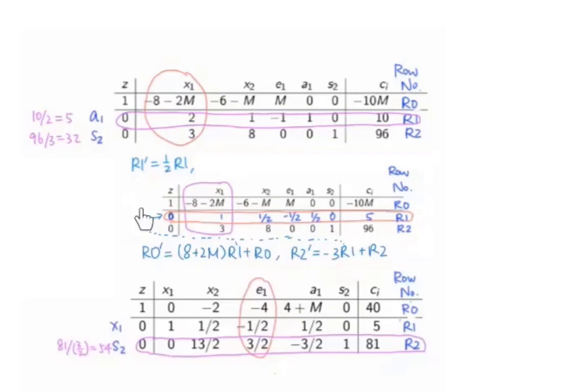Now, if we continue with this system, the next stage is that we would like to change all the other entries in this column to be 0. This can be done by multiplying row 1 with 2m plus 8 and adding to row 0 to get the new row 0, and multiplying negative 3 times row 1 and adding it to the old row 2 to get the new row 2. We shall obtain this system.